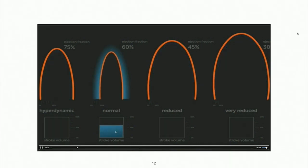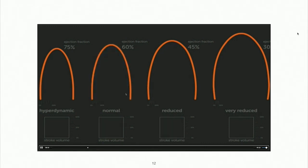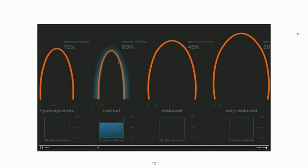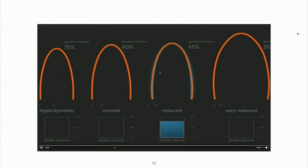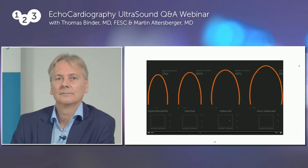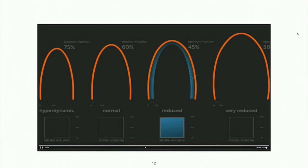If you look at this normal ventricle, let's say he's generating 80 milliliters of stroke volume. To do that, he needs an ejection fraction of 60, and this area in blue would be the distance that the endocardium travels — in other words, the contractility. Now if you compare a ventricle which is a little bit larger with less ejection fraction, for this ventricle to generate the same stroke volume, it does not need to move as much as the normal ventricle. In other words, with less contractility, it is able to generate the same stroke volume.